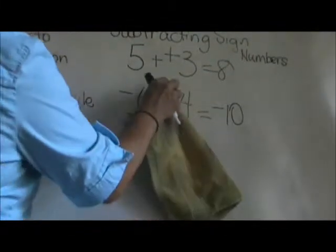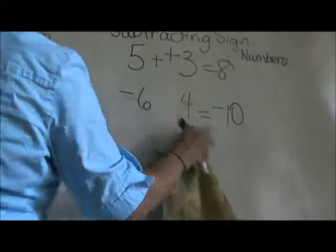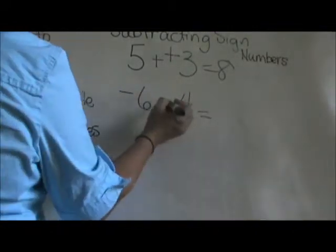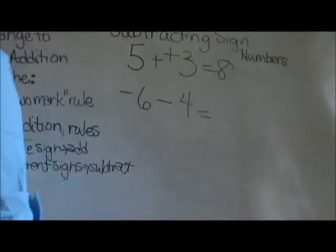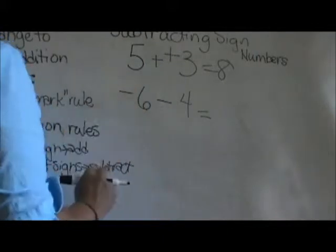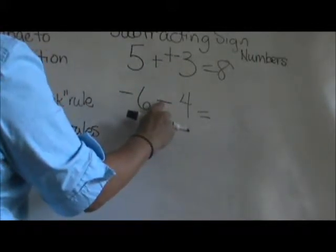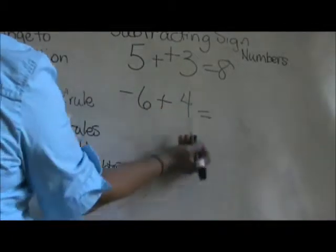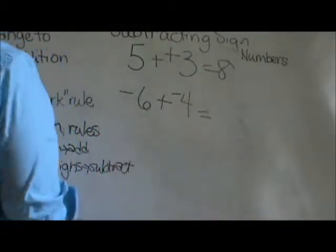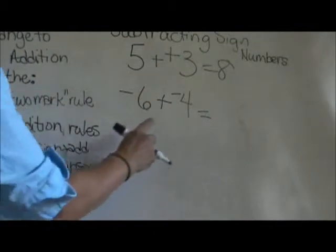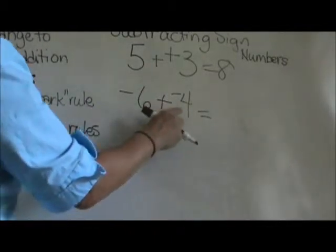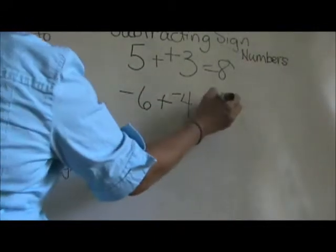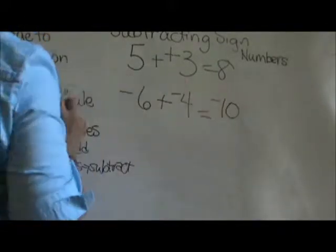Let's apply the 2 mark rule to the second problem. This one is just negative 6 minus 4. Now, I don't change the negative 6. I go to the operation which is subtraction and I make 2 marks. Plus and I have to make that a negative. Now I use addition rules. Both signs are negative so I am going to add and keep the sign. So that is negative 10.